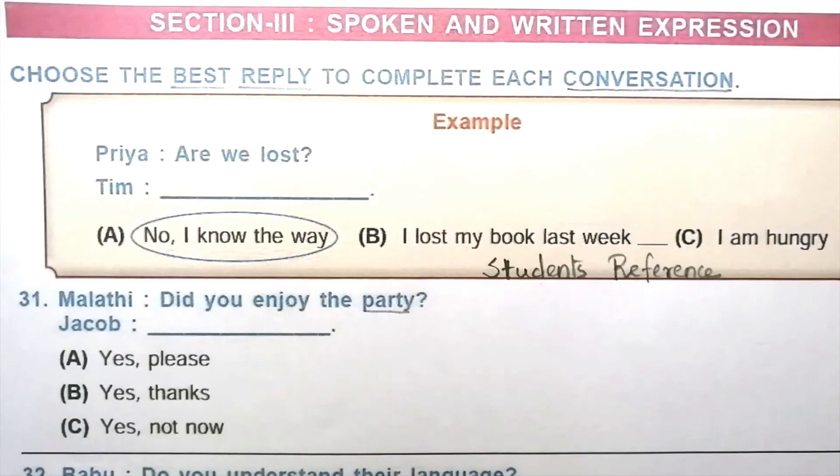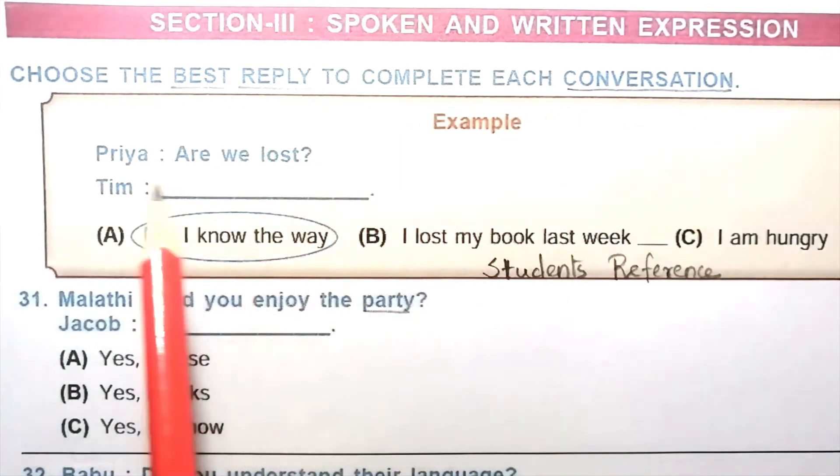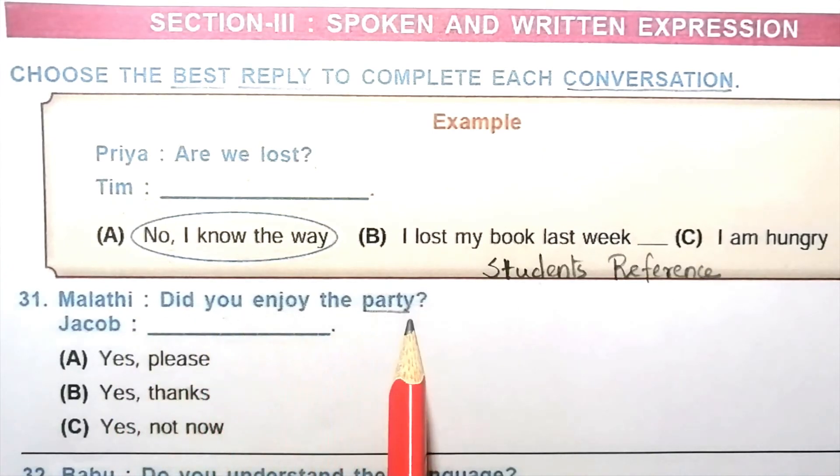Section 3, Spoken and written expression. Choose the best reply to complete each conversation. Example: Priya: Are we lost? Tim: No, I know the way. Question 31: Malati: Did you enjoy the party? Jacob: blank. Yes please. Yes thanks. Yes not now. The answer is B, yes thanks.